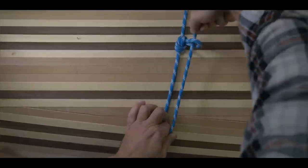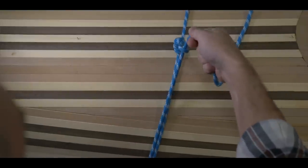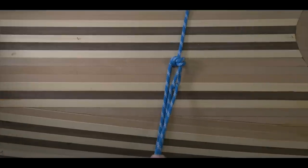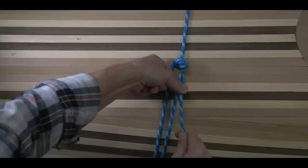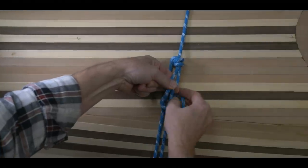The trucker's hitch allows a line to be pulled tight and secured. Once the line is pulled to the desired tension using the pulley effect of the loop in the middle of the line, the knot is secured with a couple half hitches around one or both lines.